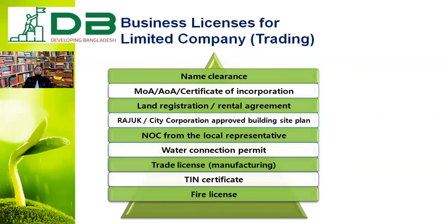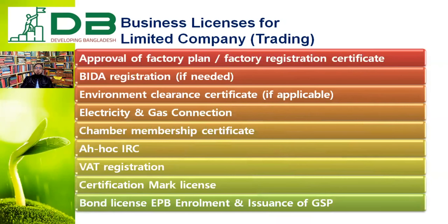For a limited company in the manufacturing sector, we have some more certifications required: name clearance, certificate of incorporation, land registration, RAJUK or city corporation approved building plan, NOC from local representative, water connection permit, trade license, TIN certificate, fire license, approval of factory plan, boiler registration, environment clearance certificate, electricity and gas connection, chamber membership certificate, IRC or ERC, VAT registration, certificate mark license, and bond license. These registrations and licenses are required for a limited company in manufacturing.